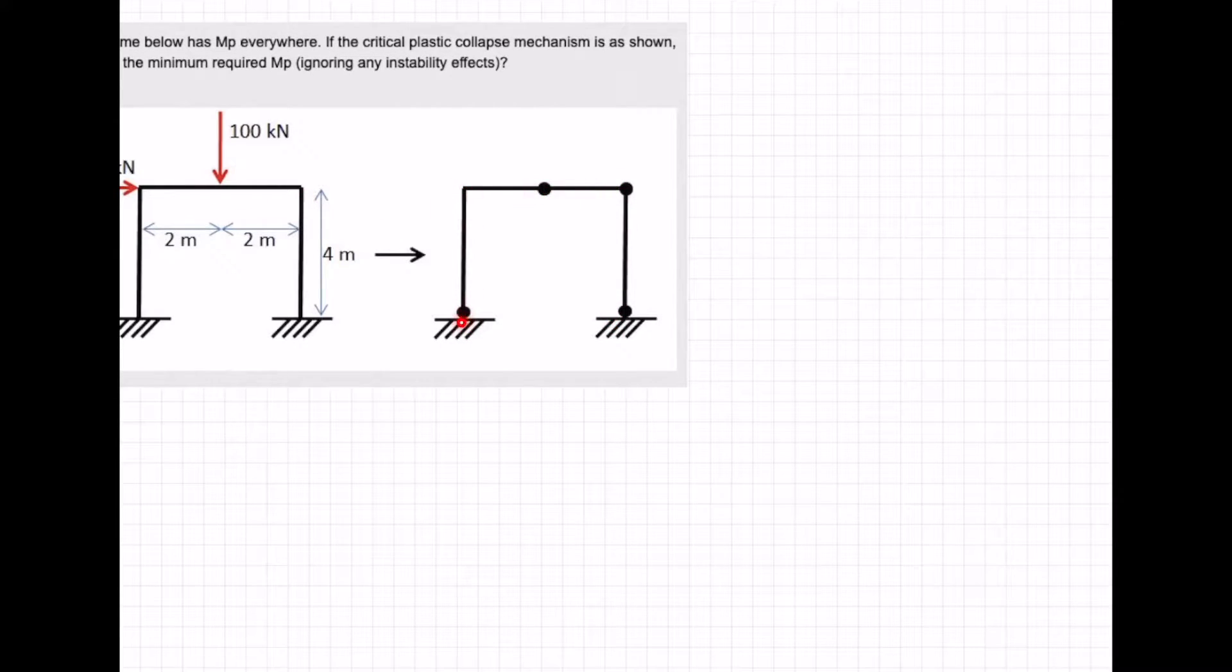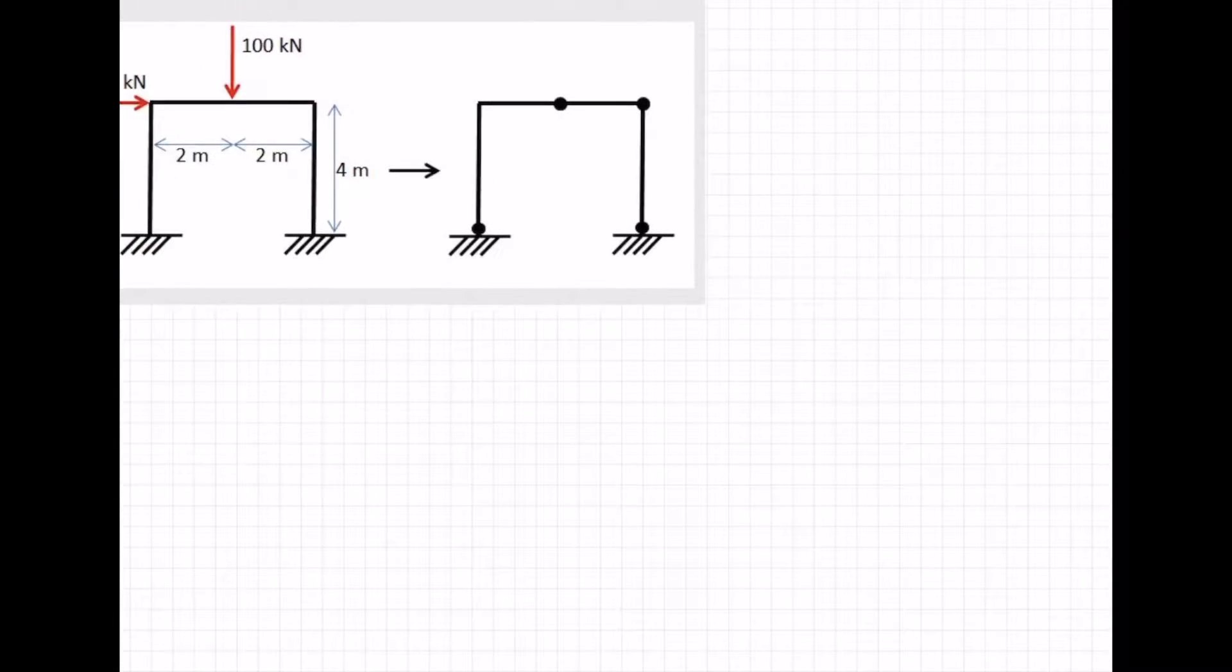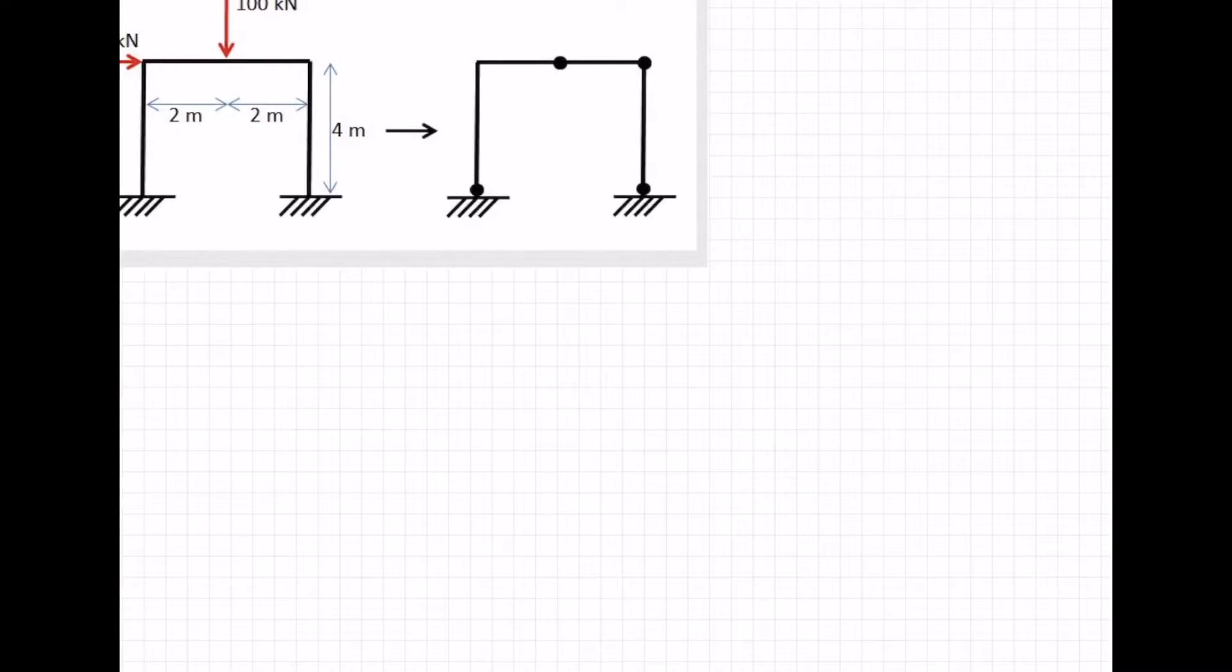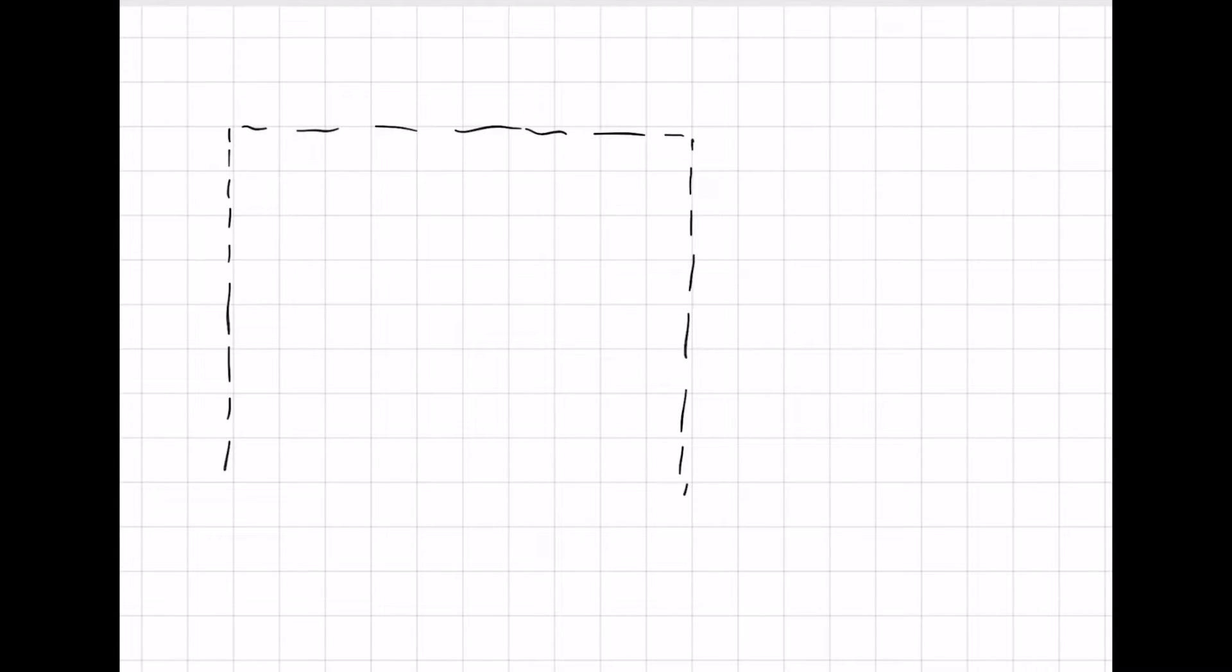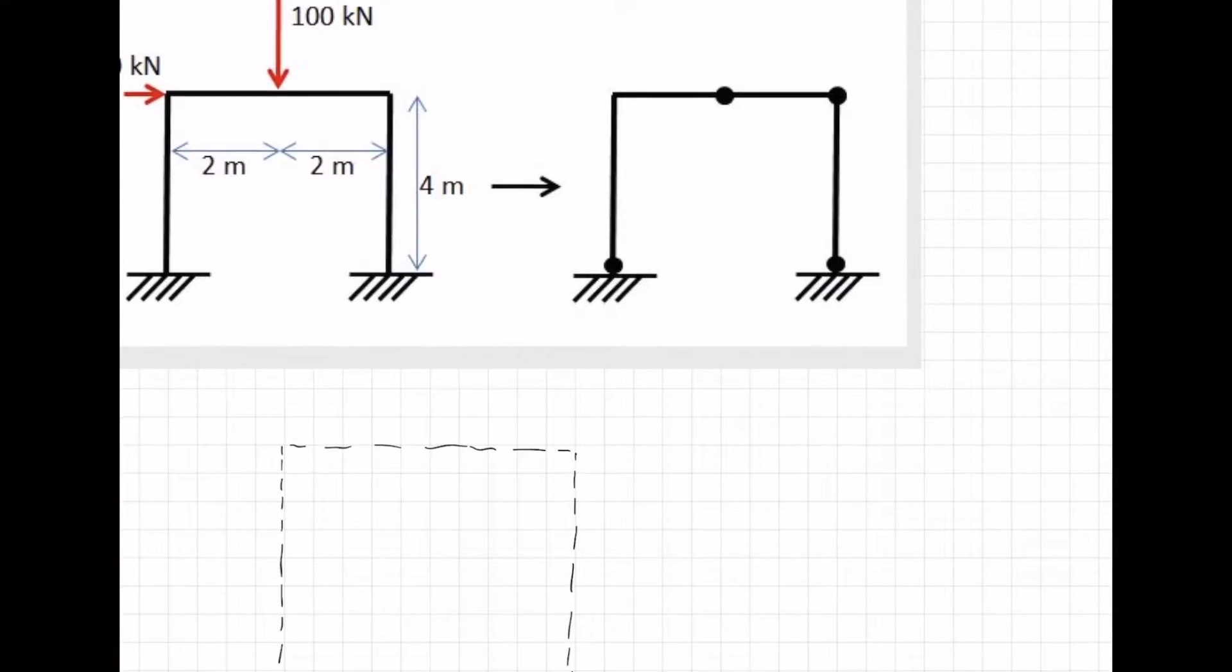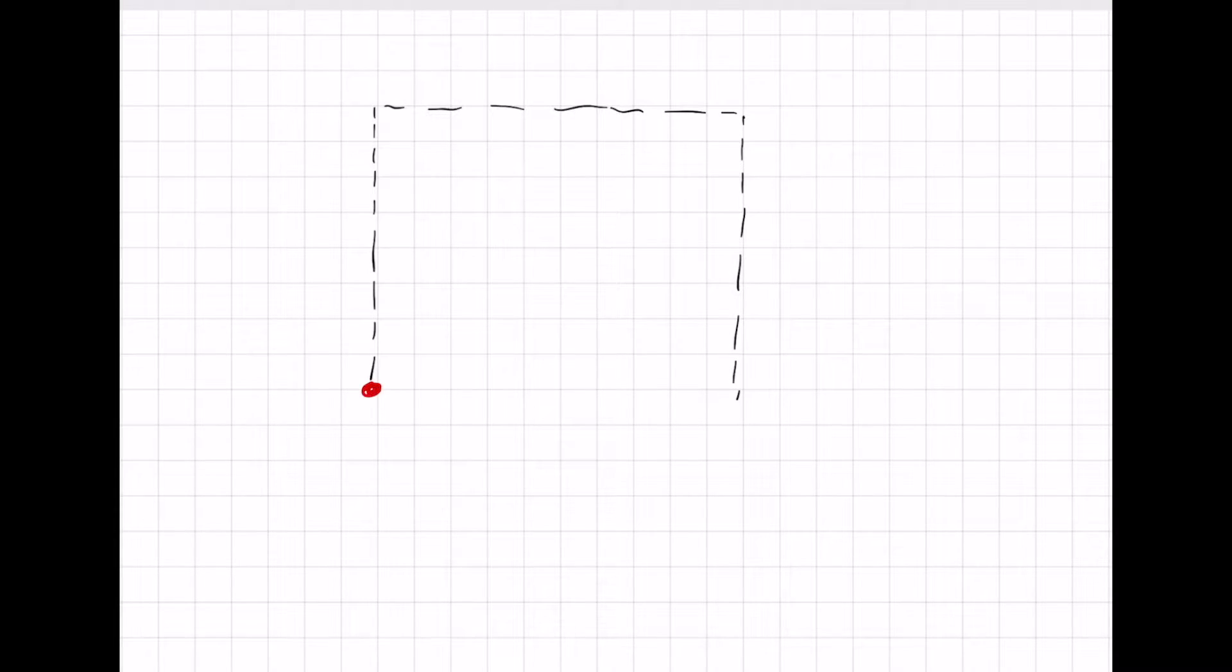We've got this sway frame mechanism here. So let's do this. I will draw it here. We have a pin at four locations down here and down here. Let's draw the deflected shape. I'm going to have a pin here, and I'm going to have a pin here.